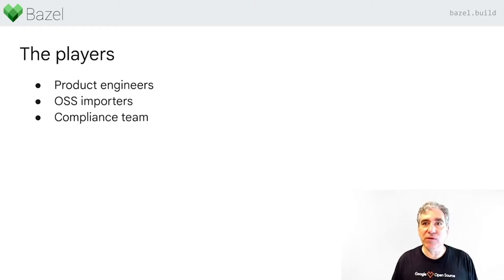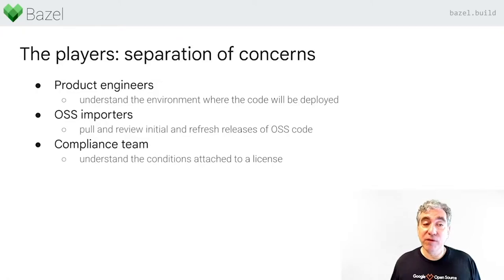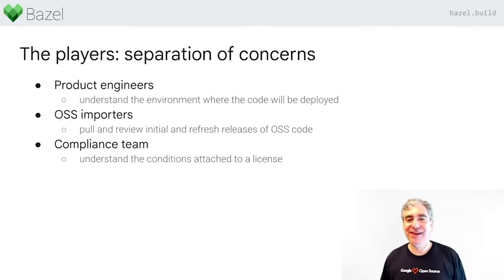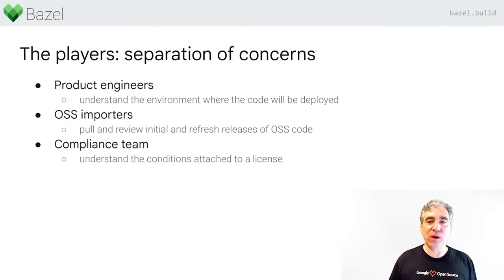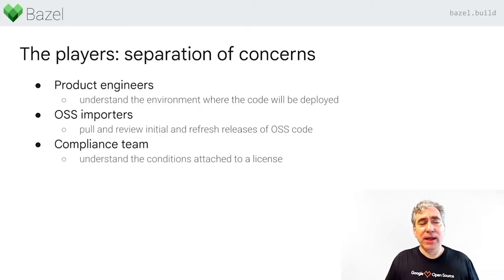Let's talk about the roles involved. There are three roles in this dance, and on a small team they blur, but it really does help to think about them as separate entities. We have product engineers — they understand what they're building, they're building a mobile app with certain characteristics. There's another role: the OSS engineer, the OSS importer. In a small organization it's usually the same engineer; in a large enough organization it might be different.